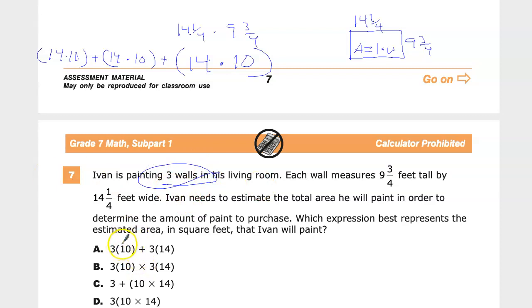The first is 3 times 10 plus 3 times 14. Well, what? That doesn't make any sense. That's not how you do area. You have to multiply the length times the width, and these two numbers are never multiplied, so that's out.